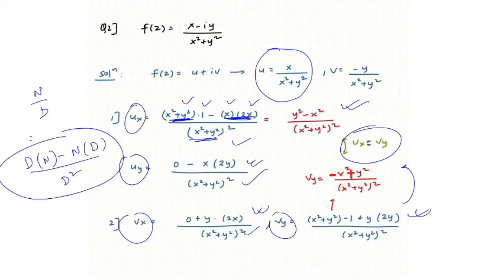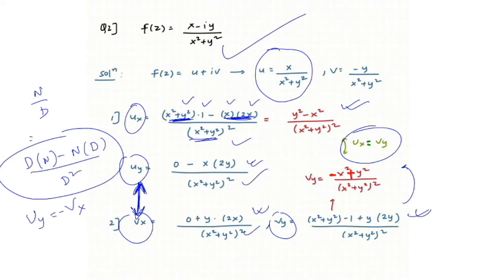Checking the Cauchy-Riemann equations: uₓ = v_y is satisfied. Also u_y = −vₓ is satisfied as well. This means the function f(z) is analytic.